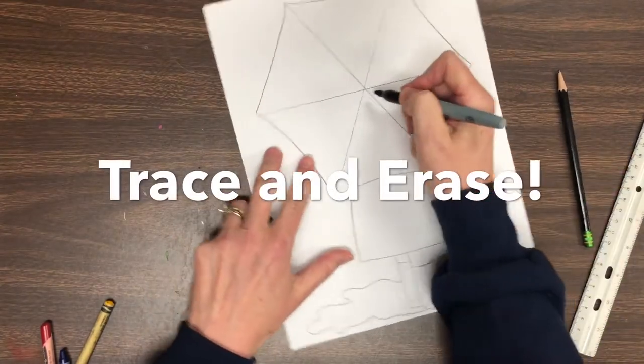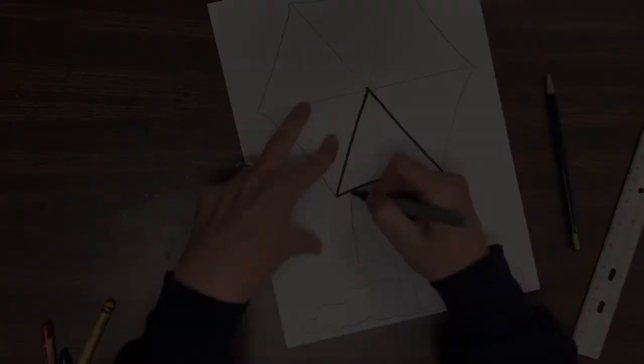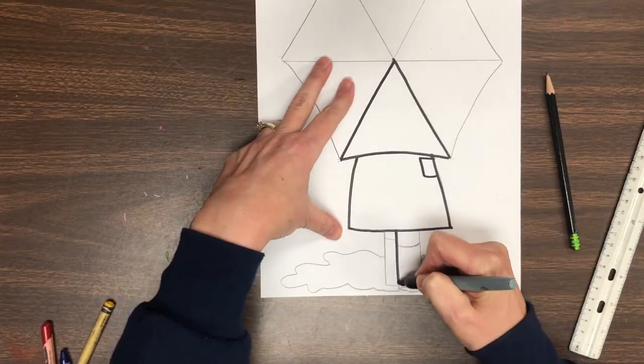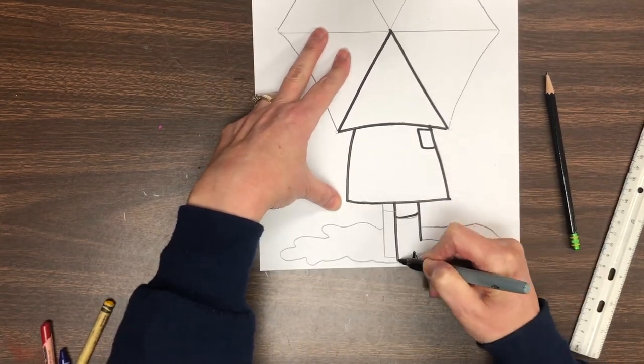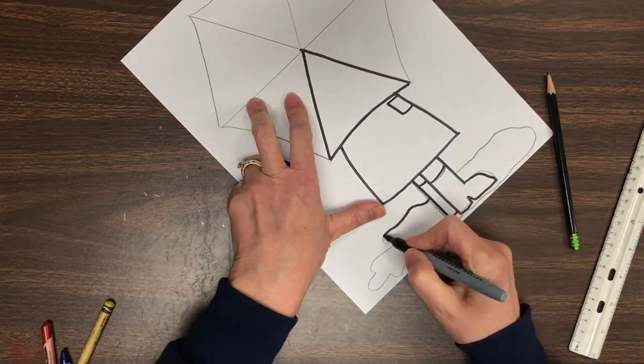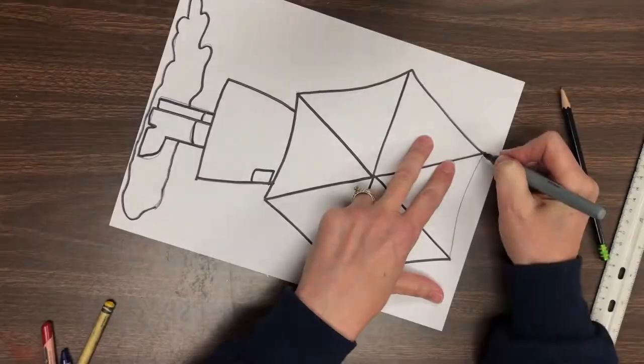Check this out. This is what I'd like for you to try next. You're going to trace and erase the whole drawing, every single line. Go over it with your black marker and then take your eraser and give it a nice erase.